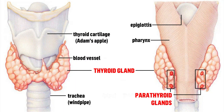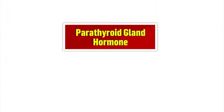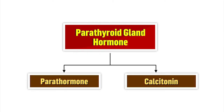What are parathyroid glands? In man, the parathyroid glands are small oval yellow-brown bodies found attached to the posterior surface of the thyroid gland. The parathyroid gland hormone contains parathormone and calcitonin.